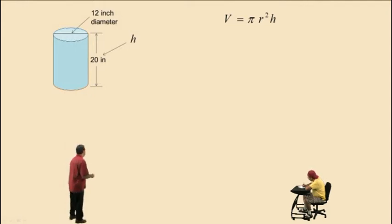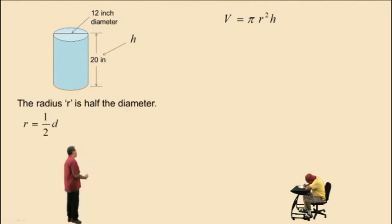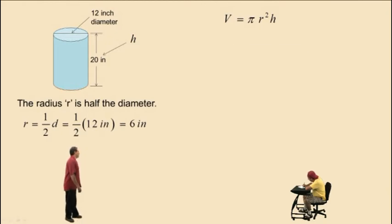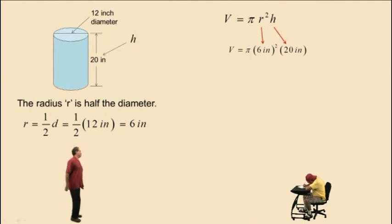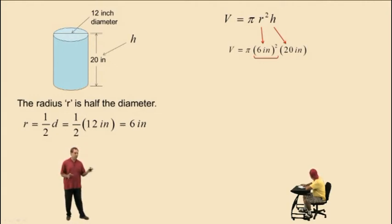Our formula requires that we have the radius and the height. We have the height, and we have the diameter, so we need to find the radius. Remember, the radius is half the diameter. So we take 1 half times 12 inches to get our radius, and therefore our radius is 6 inches. We replace r and h with their dimensions — r is 6 inches, h is 20 inches. Now we have to square the radius: 6 inches squared means 6 inches times 6 inches.